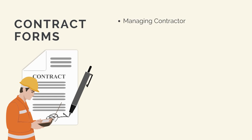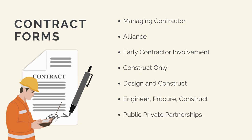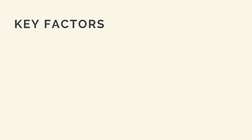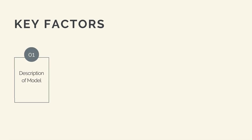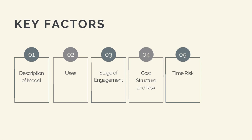These forms include: managing contractor; alliance or relationship-based contracts; early contractor involvement; construct only; design and construct; engineer, procure and construct, or EPC for short; and finally, public-private partnerships. For each of these models, we'll provide a description and uses, identify the project stages the contractor is involved in, look at the cost structure and cost-risk transfer, the time-risk transfer, and finally the pros and cons of the model from the perspective of the client.